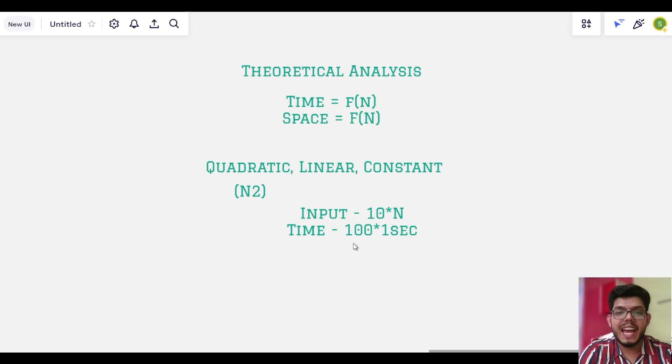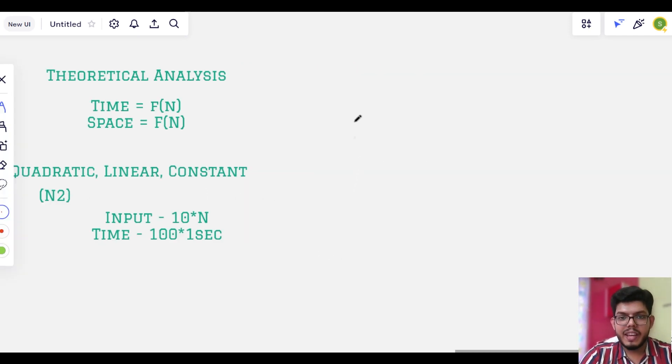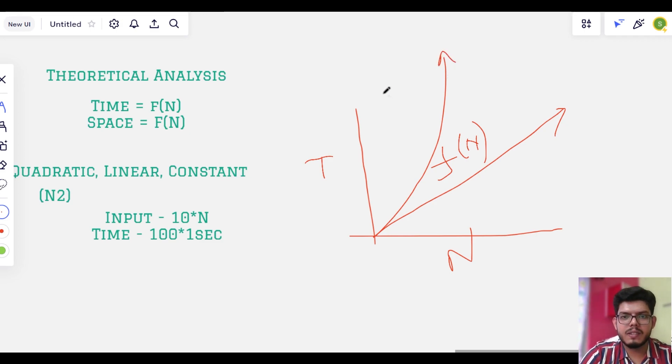This means this quadratic time is going to grow very fast. Generally, what you will see, there are different types of plots for time versus n graph. Linear plot is something like this, when the function is f of n. The quadratic plot is something like this, when the function is f of n squared.